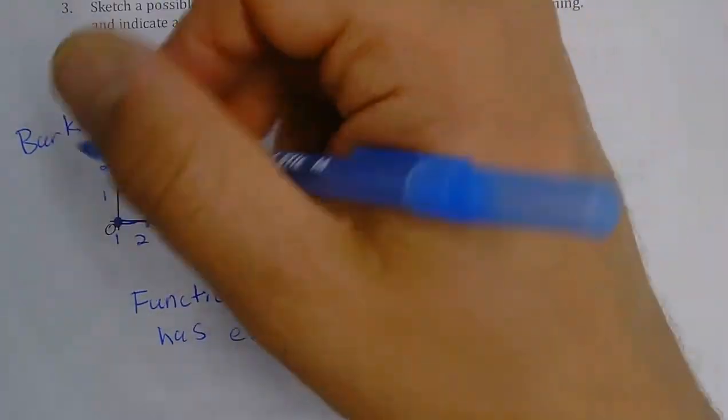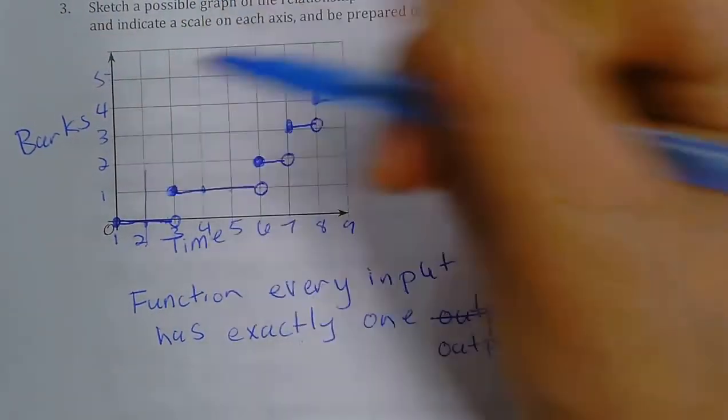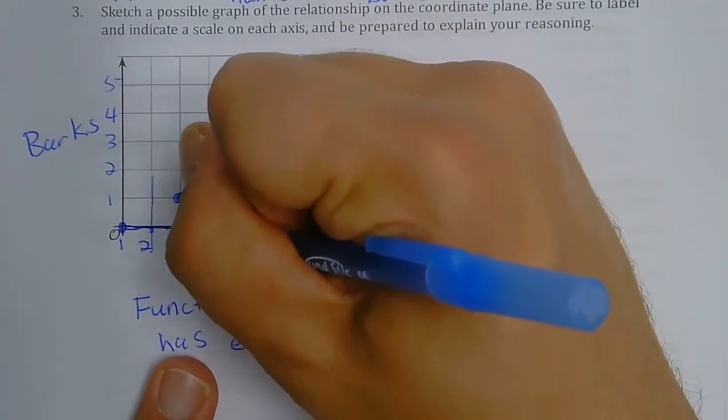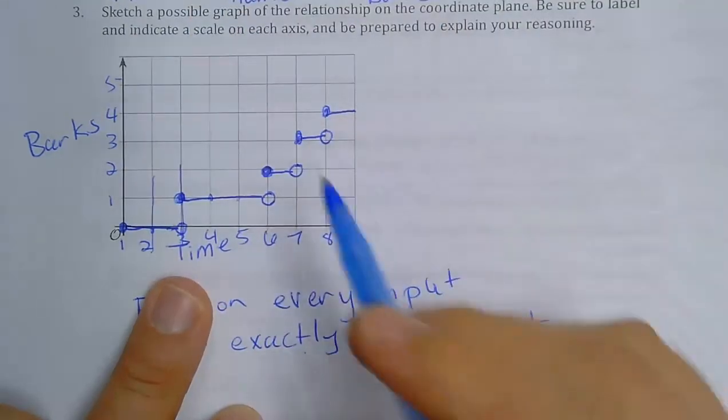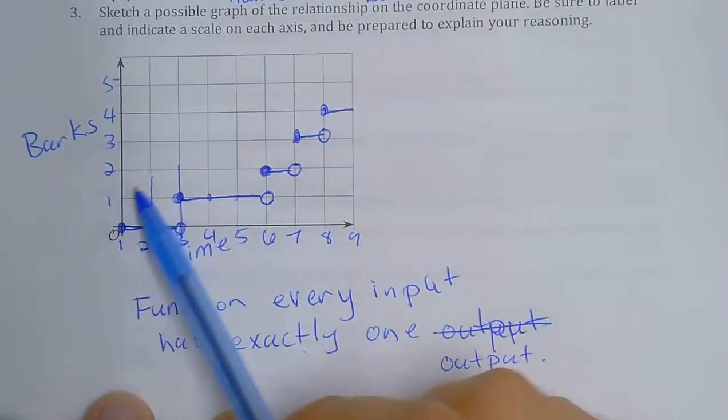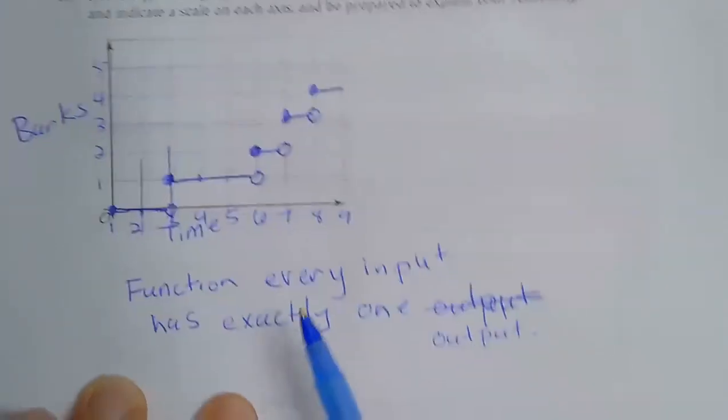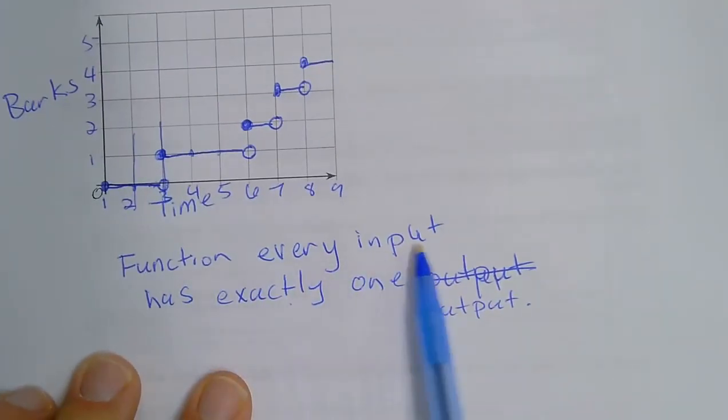And how you can see that on the graph, if I draw a vertical line, it's only going to touch the function once. Even through here, if you notice, it's not touching the function at the open dot, but it would touch the function there. So on a graph, if you draw a vertical line to be a function, it only touches once. And a function for every input, there's only one output.